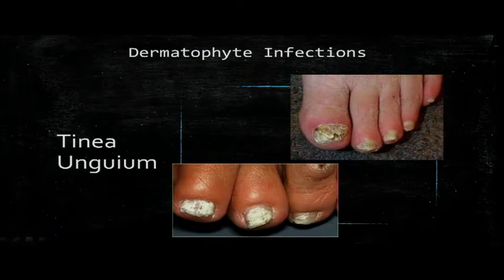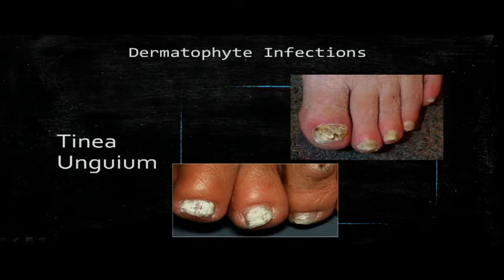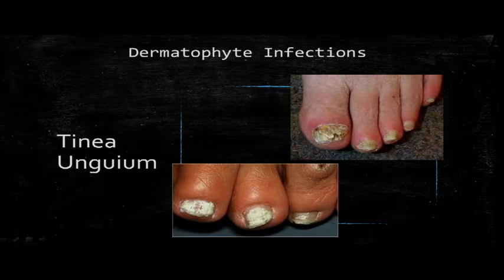Tinea pedis, or athlete's foot, can be interdigital — the most common form — or the moccasin type, which is hyperkeratotic, or the vesiculobullous type, which is only on the medial foot. If you see accompanying ulcerative lesions with the interdigital form, you most likely have a secondary bacterial infection. Tinea unguium, known as onychomycosis, is a fungal infection of the toenails specifically. KOH preparation is useful, but nail clippings with PAS staining are more sensitive than fungal culture. Your differential includes traumatic nail injury, onychogryphosis — or ram's horn overgrowth — and nail psoriasis.